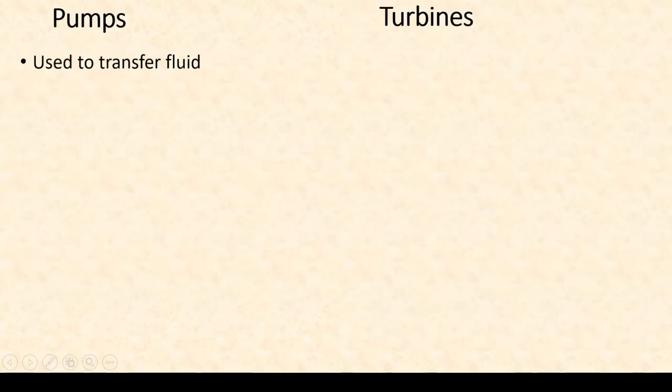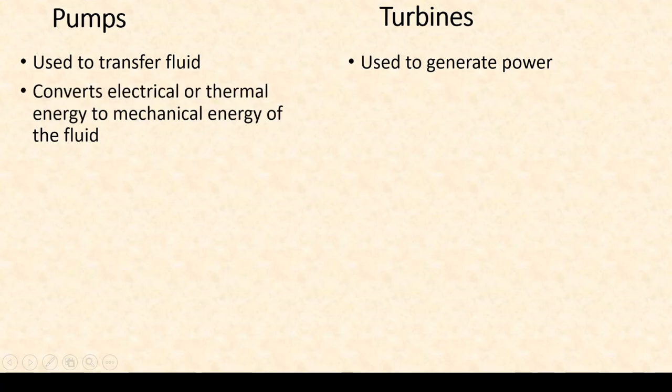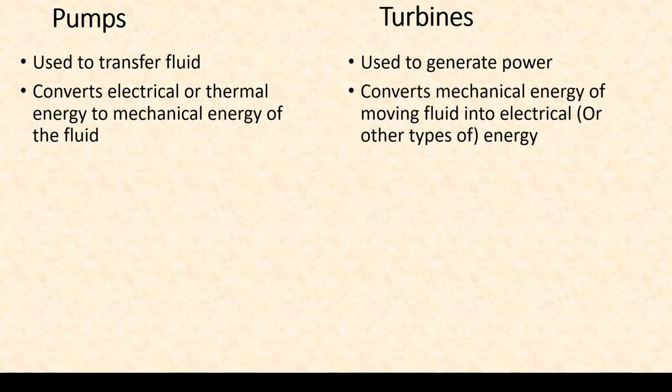A pump is used to transfer fluid by using external energy. On the other hand, a turbine is used to generate power. A pump converts electrical or thermal energy to mechanical energy of the fluid — that means it imparts motion to the fluid by using electrical or thermal energy. A turbine, on the other hand, uses the mechanical energy — that is, the motion of fluid — and converts that to electrical energy, or sometimes to other types of energy, but in most traditional turbines it's mostly electrical energy.